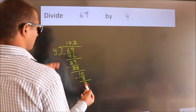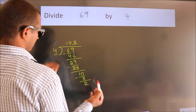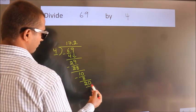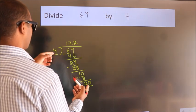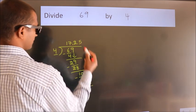After this, we already have the decimal. So, directly take 0. So, 20. When do we get 20 in 4 table? 4 fives 20.